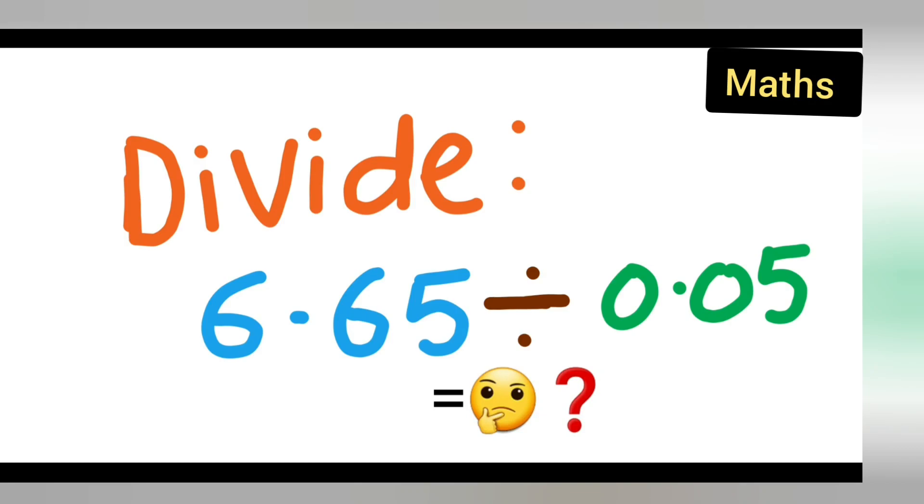Welcome to today's class of mathematics. Today's question is divide 6.65 by 0.05. Now here you have numbers with a decimal point and many of you find it very difficult to divide, especially when the numbers have a decimal point.